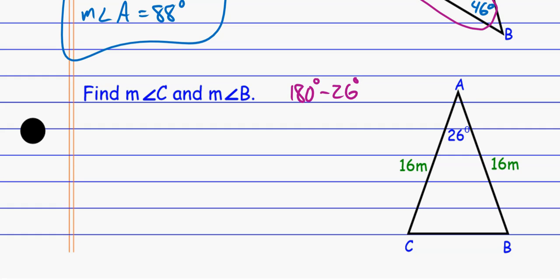And so I subtract this, that gives me 154. That means that these two angles down here have to add up to 154 degrees in order for me to get the 180, and they have to be the same, which means I have to split up that 154 degrees evenly.